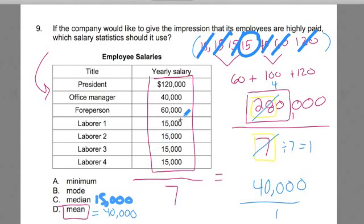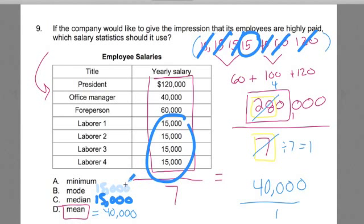The mode is the number that appears the most, which is again 15,000. And the minimum — the smallest number — is also 15,000.